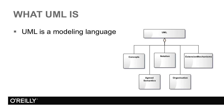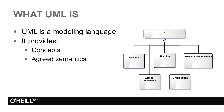UML is a modeling language. You can use it to produce models of software systems. It provides concepts, which are the things of interest in modeling software systems; an agreed semantics, which means that each of those concepts has a defined meaning; a notation, which tells the user how to represent the concepts graphically or in some cases in text format; and an organization mechanism, which enables users to structure and manage their models.